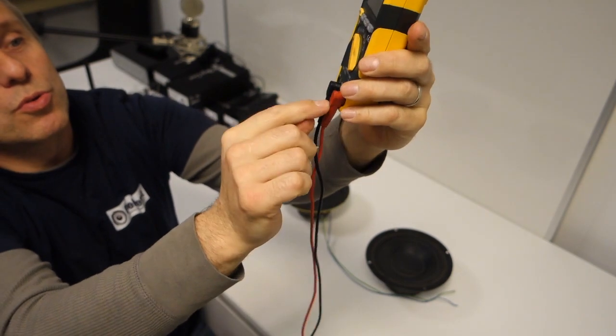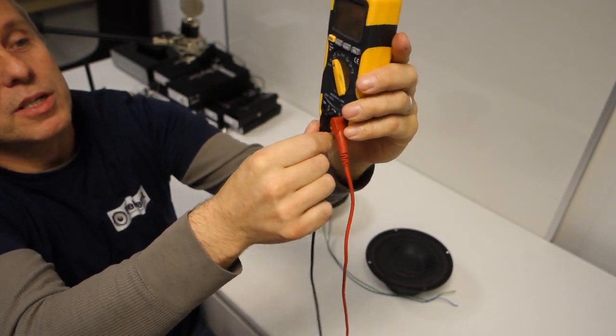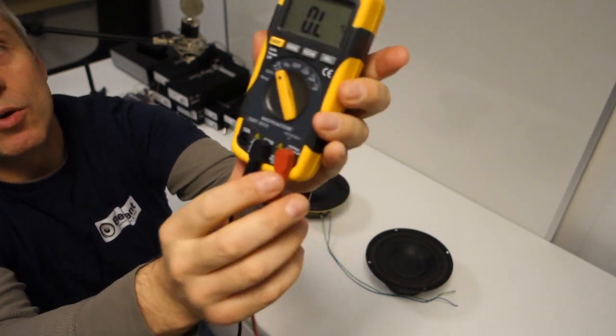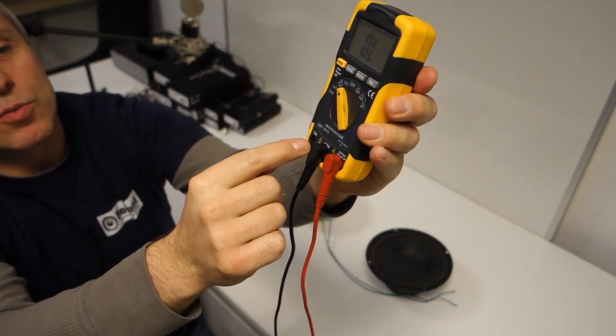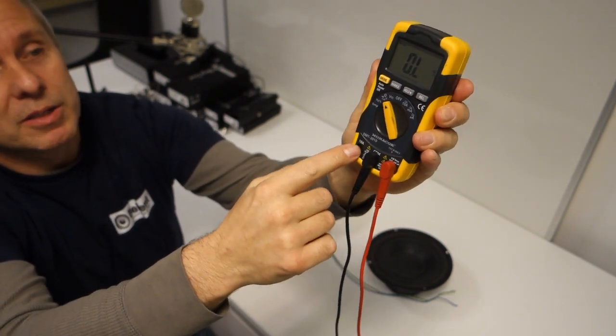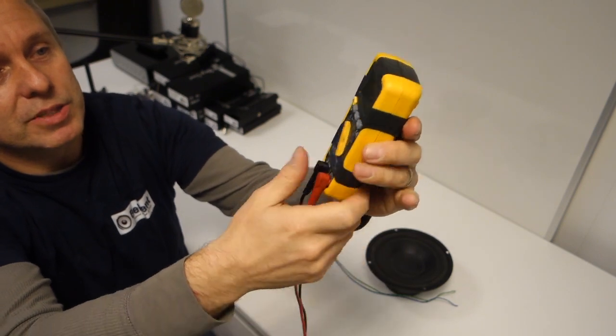It's also shown where to put the probes. Always the black one in common and then the red one where you see the ohm sign. The other one would always be for amps for current and you don't use that for this.